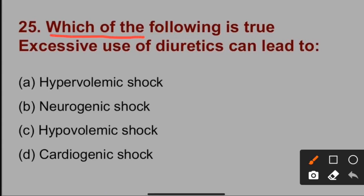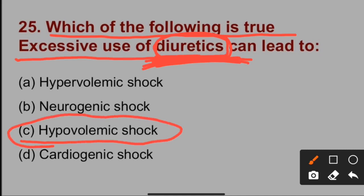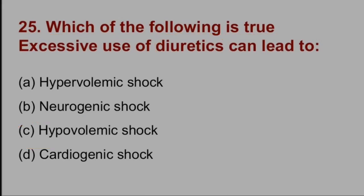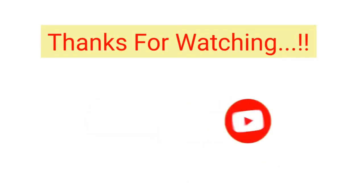Last question: Which of the following is true about excessive use of diuretics? Diuretics increase urination. When diuretics are taken, they decrease the extracellular fluid volume. Due to this decreased volume, hypovolemic shock can occur when diuretics are used in excess. Thank you.